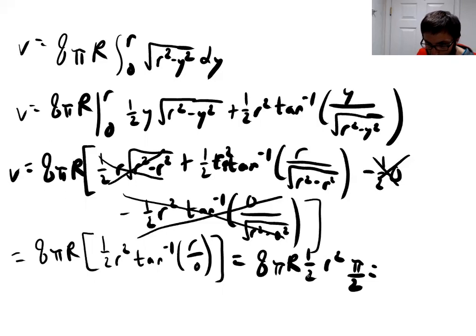That will then get you 8πR times ½r² times π/2. If you cancel all these 8s and 2s out, that's going to get you 2π² - 8 divided by 4 - R times r², which is 2π²r²R. And that is your volume of a torus.